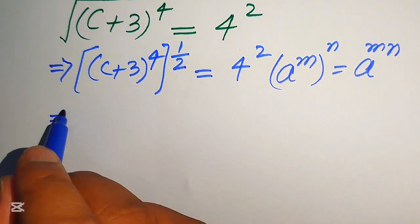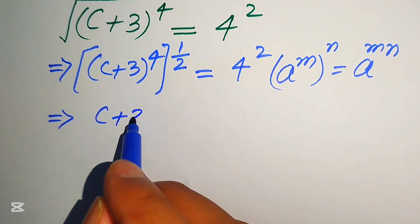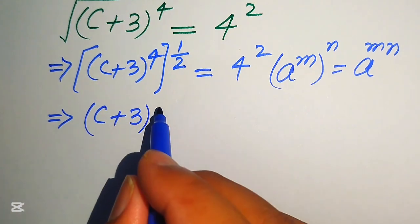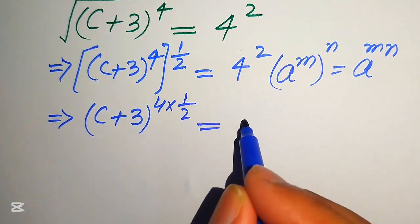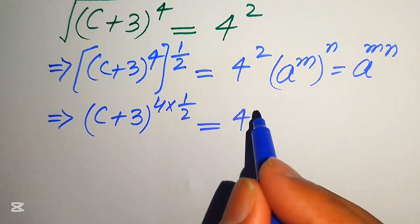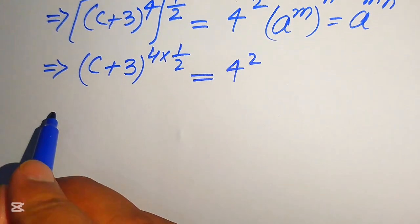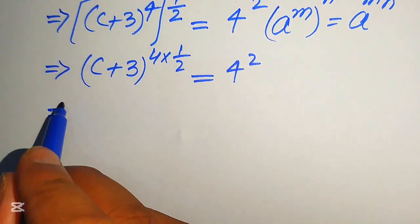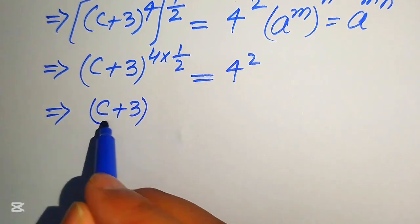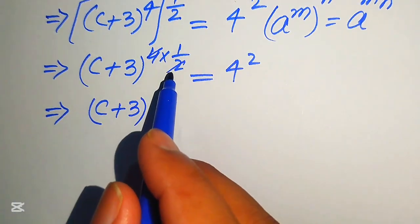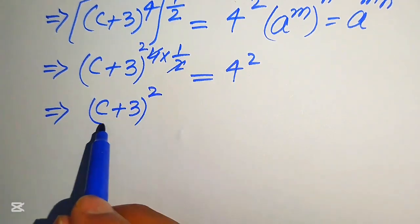According to this exponent law, the two exponents are multiplied by each other, and we get (c + 3) to the power of 4 multiplied by 1 over 2, equals 4 squared. In the next step, the 4 and the 1 over 2 cancel, giving us 2 times 2 equals 4.